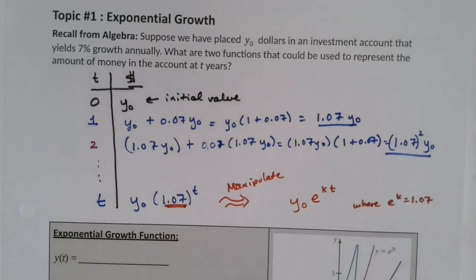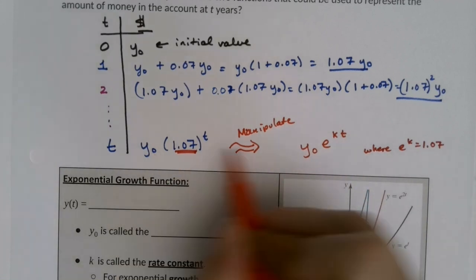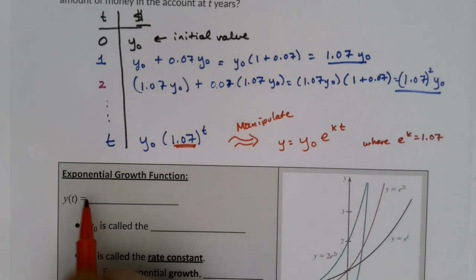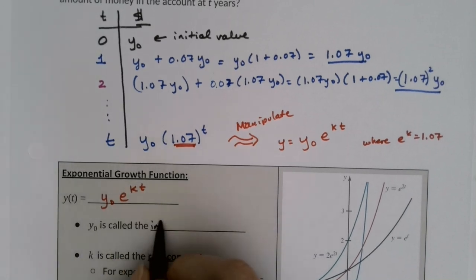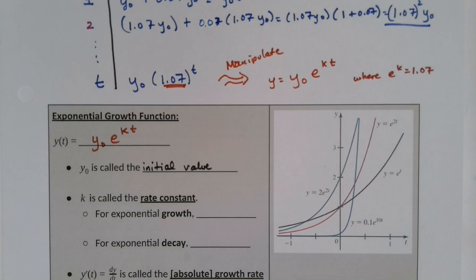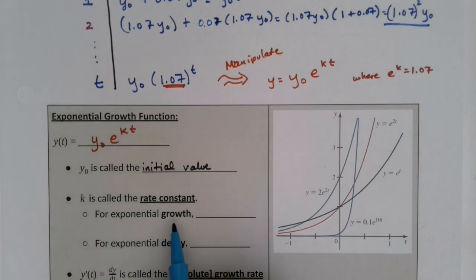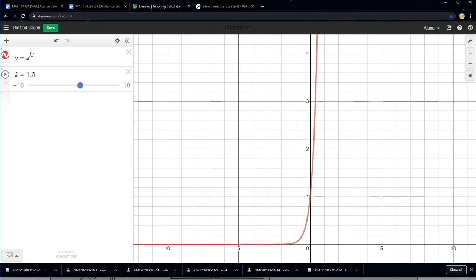The first form is what algebra classes use; we're going to use Y equals Y-zero e to the kT because it uses Euler's number. Y-zero is called the initial value. For exponential growth, k will be greater than zero — positive. For exponential decay, k will be less than zero. You can see on the graph: positive k gives exponential growth, negative k gives exponential decay.